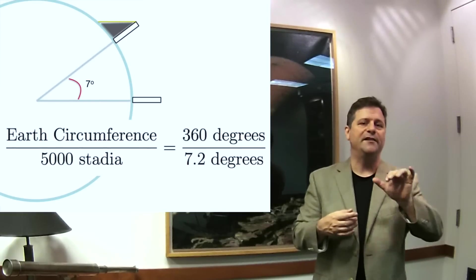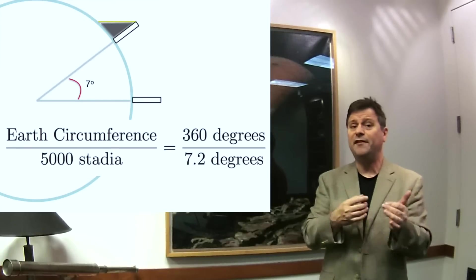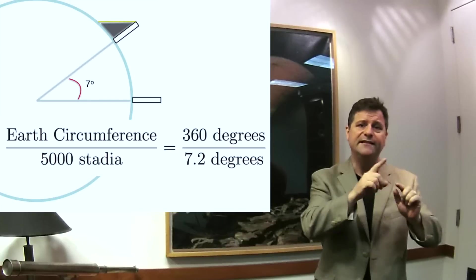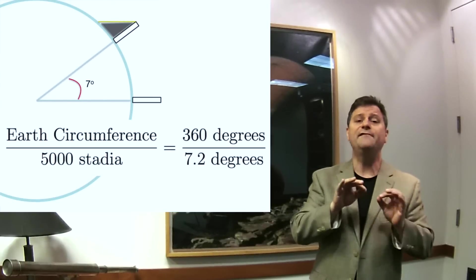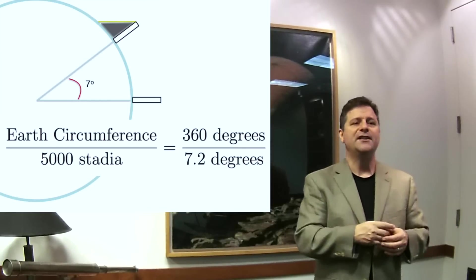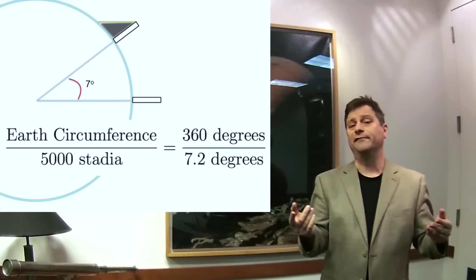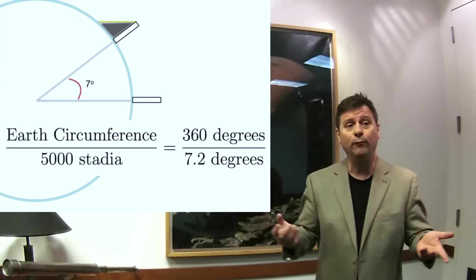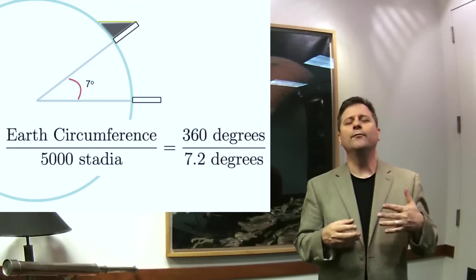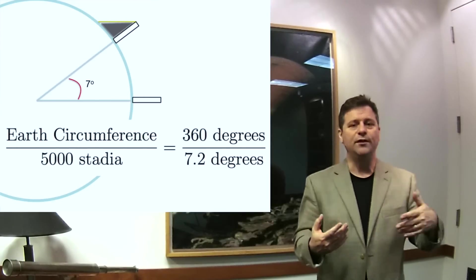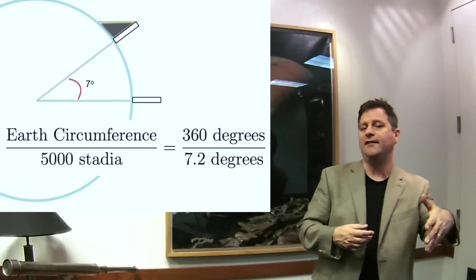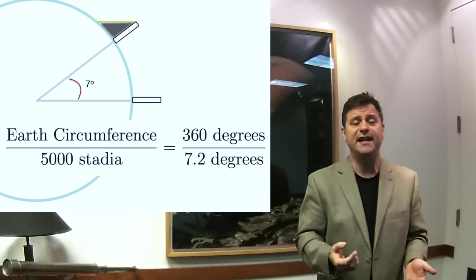But seven degrees divided by 360 degrees, that's the same thing as saying the length of an arc on the surface of the earth compared to the entire circumference. So the length of the arc was 5,000 stadia and the circumference of the earth is what we're trying to discover. So if we have 7.2 divided by 360, and that's equal to 5,000 divided by your number, then that works out to be about 250,000 stadia. Or more specifically, seven degrees is about one-fiftieth of 360. So 5,000 stadia times 50 is about 250,000 stadia.